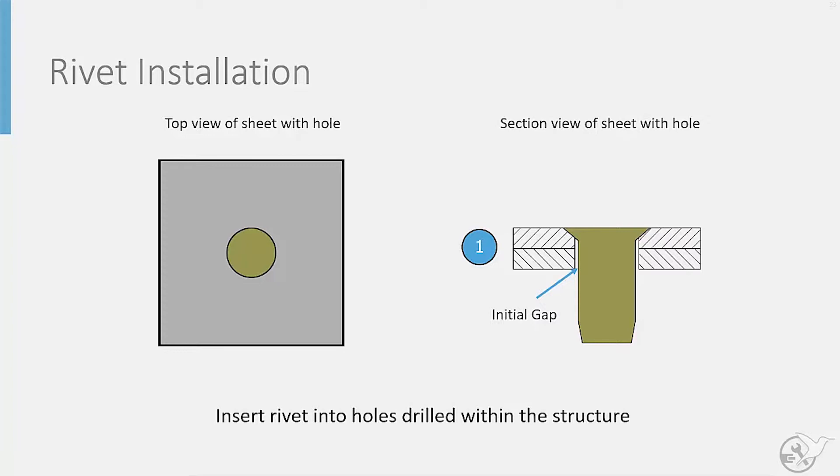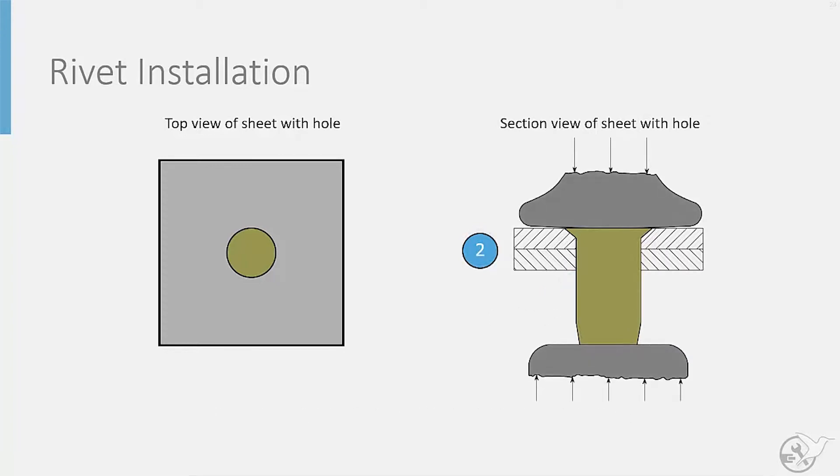With the rivet in place, it is possible to begin the next step. In this step, compressive forces are applied to the rivet through either squeezing or hammering. This action causes the rivet to expand, first elastically, then plastically, filling the fastener hole.